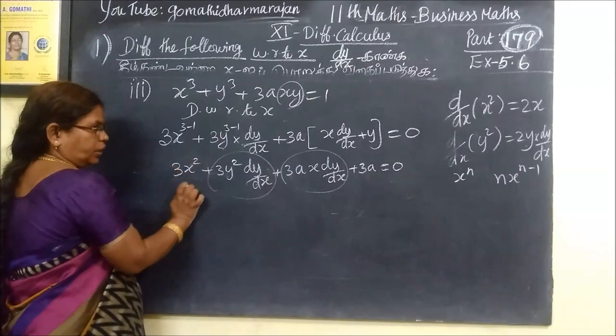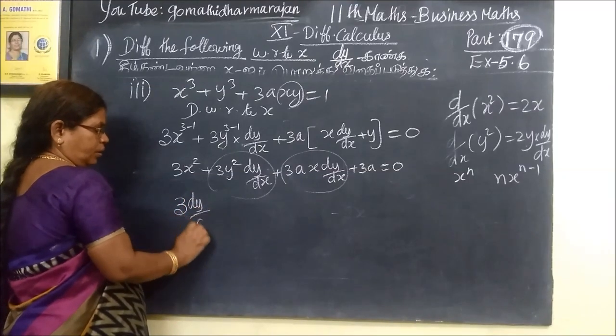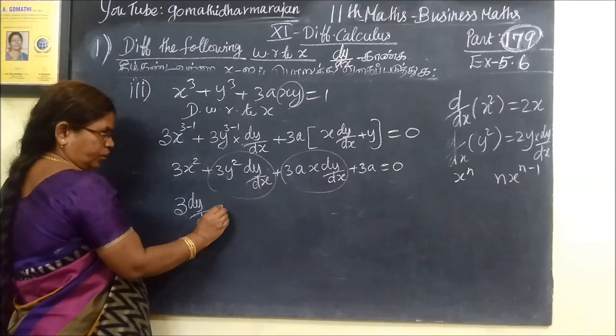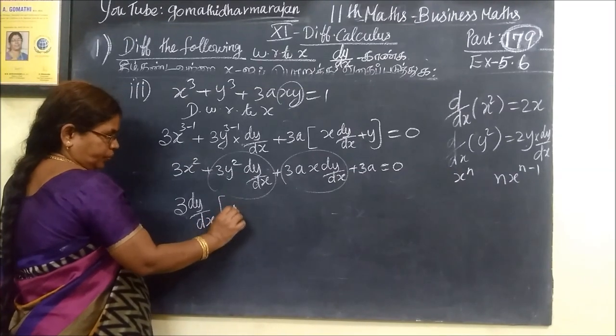3 dy/dx is common. So we can take as common. We can write a bracket and write y squared.